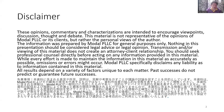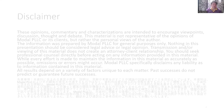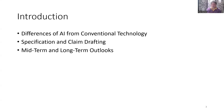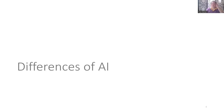The most common question I get these days is about prosecuting and preparing patent applications for artificial intelligence at the USPTO. This arises due to differences of AI from conventional technology. Once we understand those differences, we can look at how we might draft our specification and claims differently, and then we'll look at the midterm and long-term outlooks for prosecuting these things.